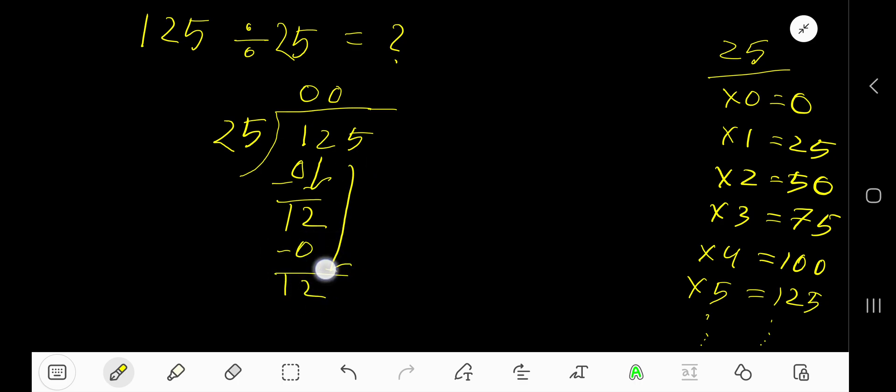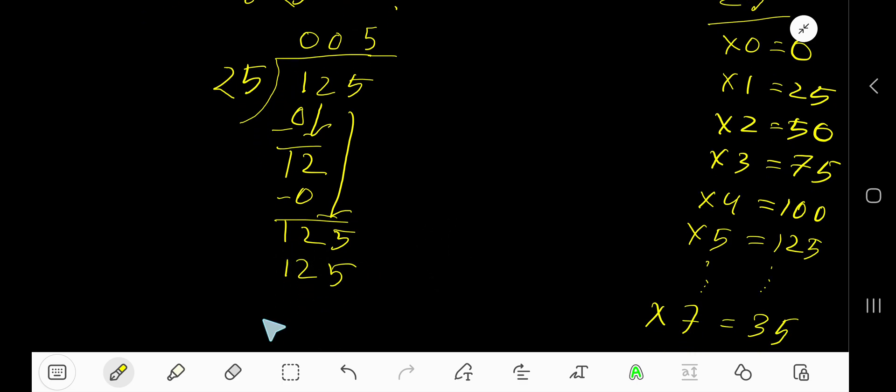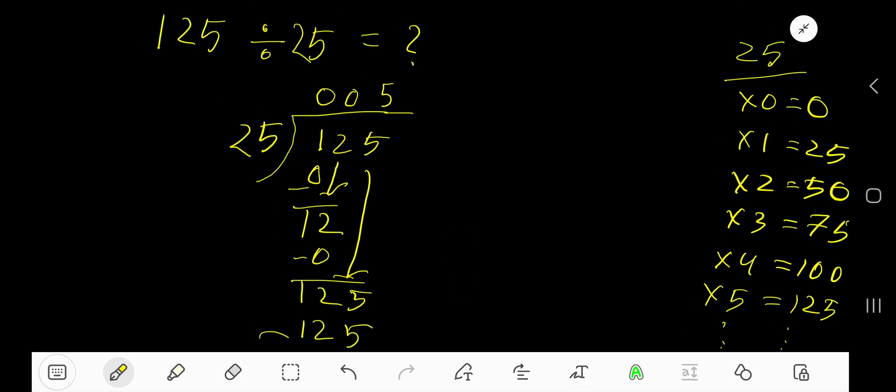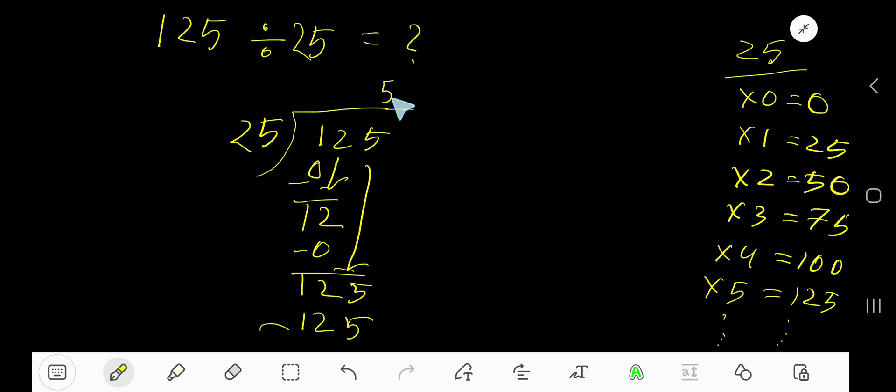25 goes into 125 how many times? Five times, right. Five times 25 is 125. Our remainder is zero, so we are done. 005 means 5, so our answer is 5.